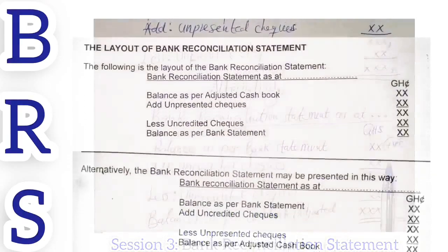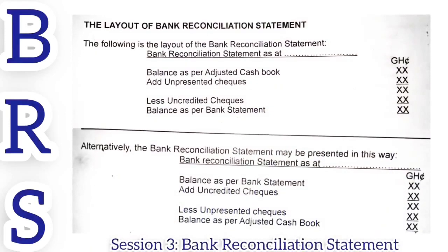As you can see on the screen, this is a summary of the two alternatives we deal with when preparing the bank reconciliation statement — the first approach using the adjusted cash book, and the alternative approach using the bank statement balance.